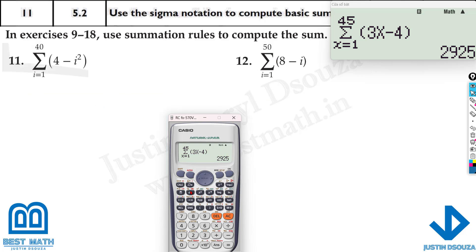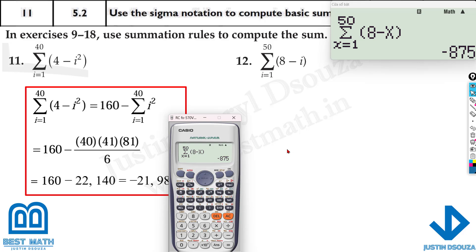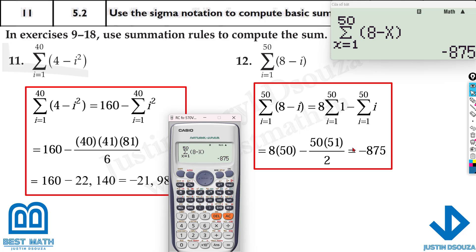Similarly you can solve all these problems. I'll do the twelfth one here. It is 8 minus i, that is alpha x. The variable is only x. It starts from 1 and goes until 50. So this is the answer here: minus 875.